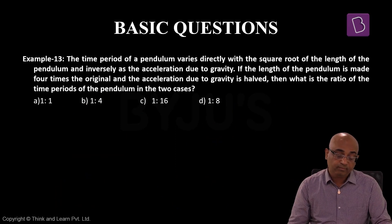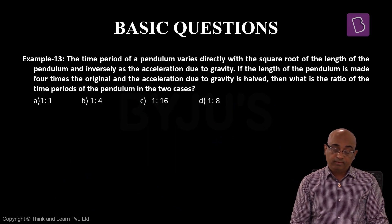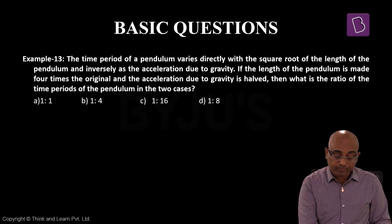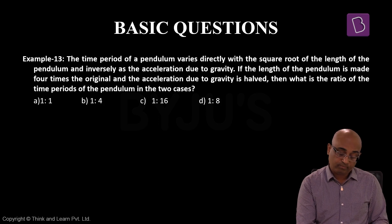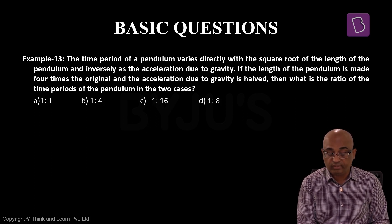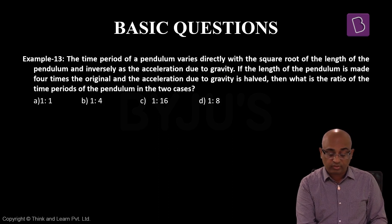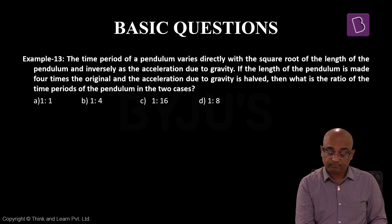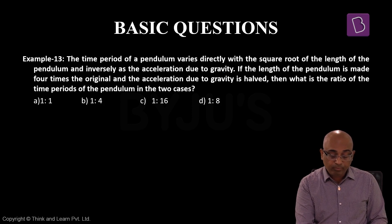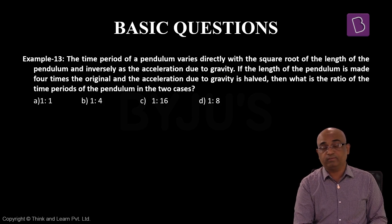Example number 13 discuss karenge. The time period of a pendulum varies directly with square root of the length of the pendulum and inversely as the acceleration due to gravity. If the length of the pendulum is made 4 times the original and the acceleration due to gravity is halved, then what is the ratio of the time periods of the pendulum in the two cases?